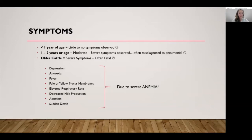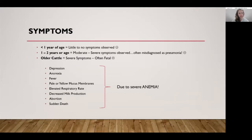Older cattle are the ones that are going to suffer the most severe symptoms and often succumb to this disease. Symptoms that you may notice include depression, anorexia — meaning lack of appetite or going off feed — fever, and if you can get close enough, pale or yellow mucous membranes around the mouth, nose, and whites of the eyes. If it's a female, the inside of her vulva may appear pale or yellow in color.